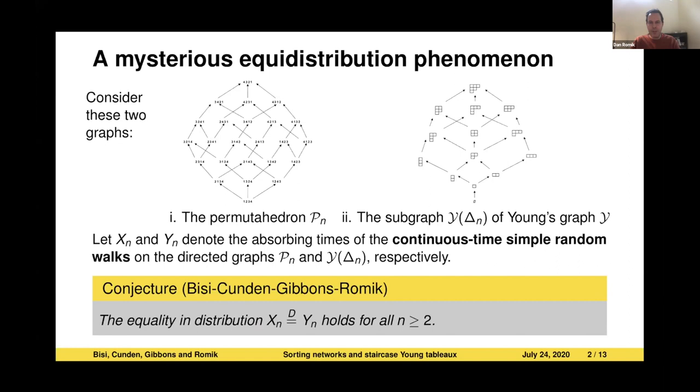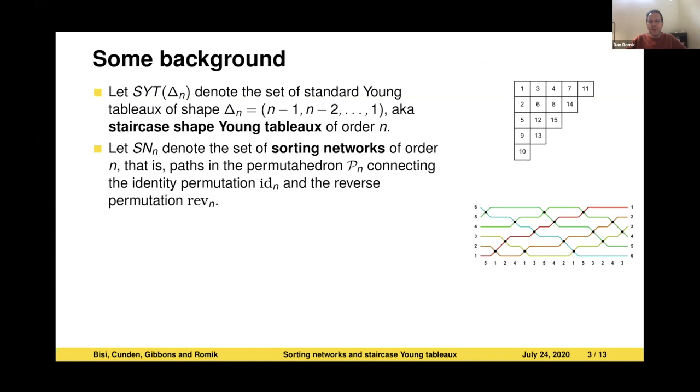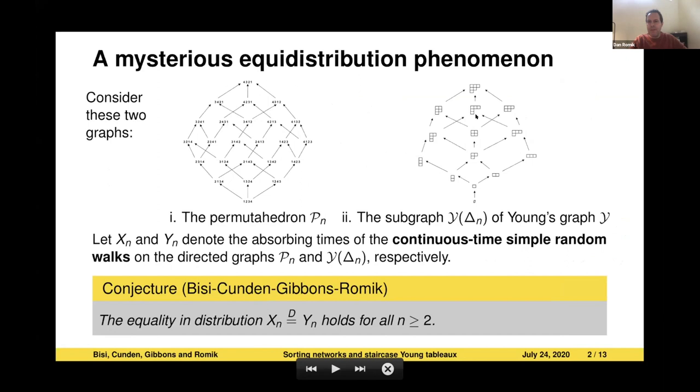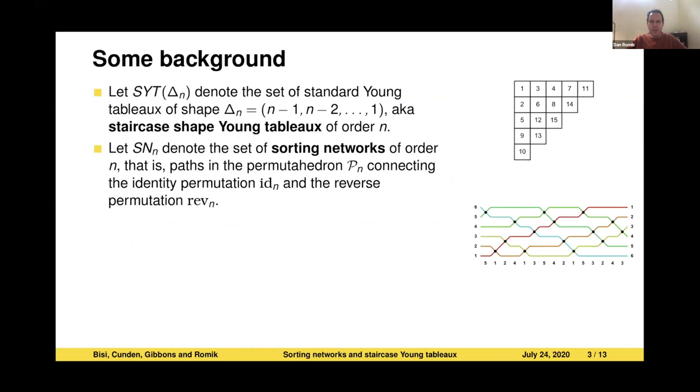Let me backtrack a bit and discuss background to frame the discussion in more detail. SYT of delta N is my notation for the set of standard Young Tableau of shape delta N, where delta N is the staircase shape with N minus one rows. Familiar objects that we all know and love. Here is a standard Young Tableau on the right, an example of one. Standard Young Tableau correspond to paths in this graph, the subgraph Y of delta N of Young's graph by a standard projection that I'm sure most of you know about.